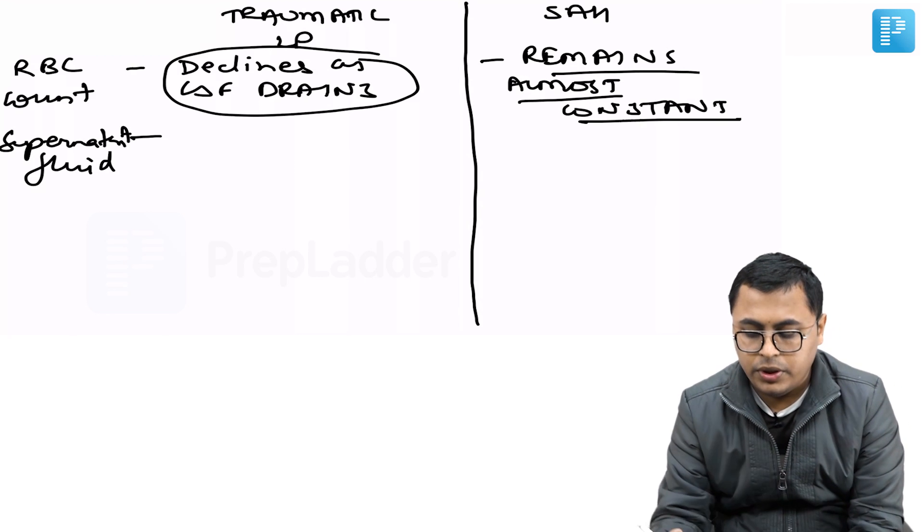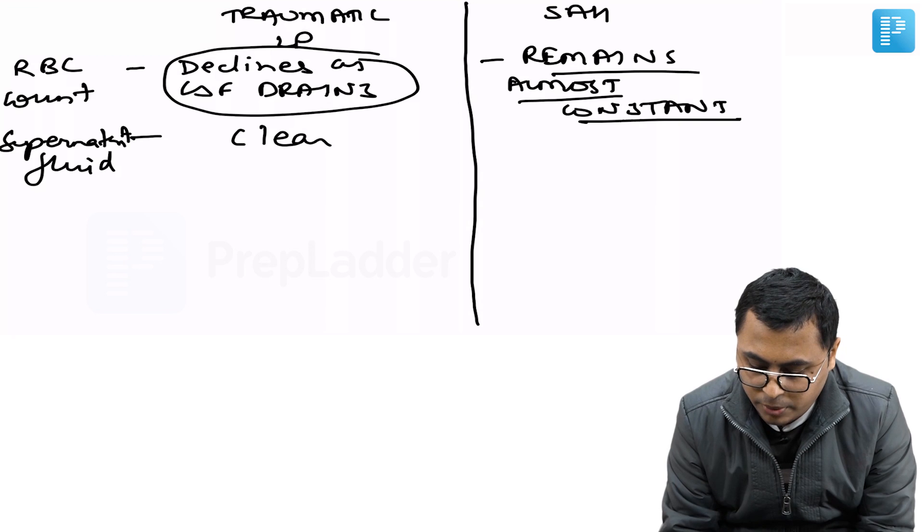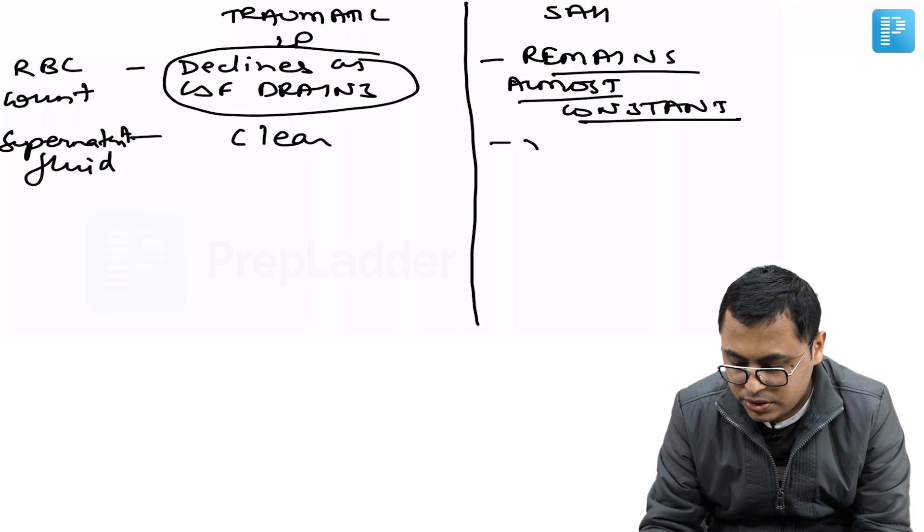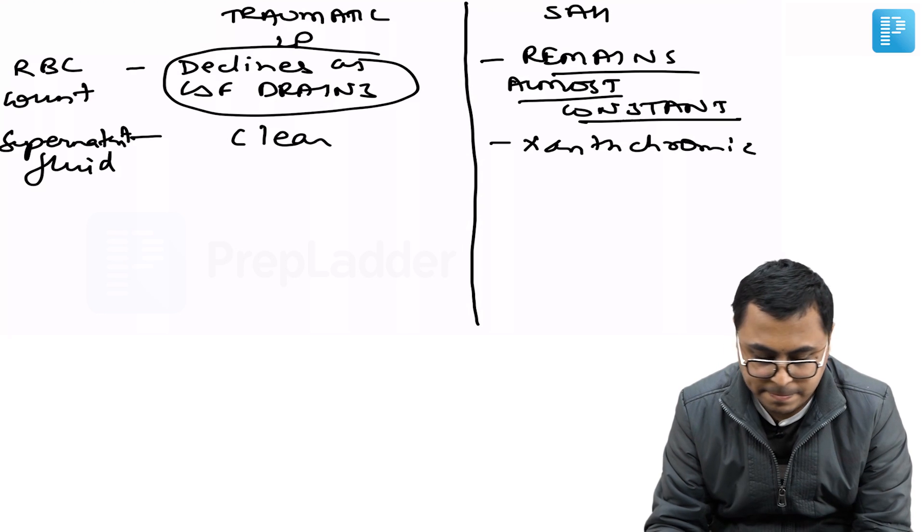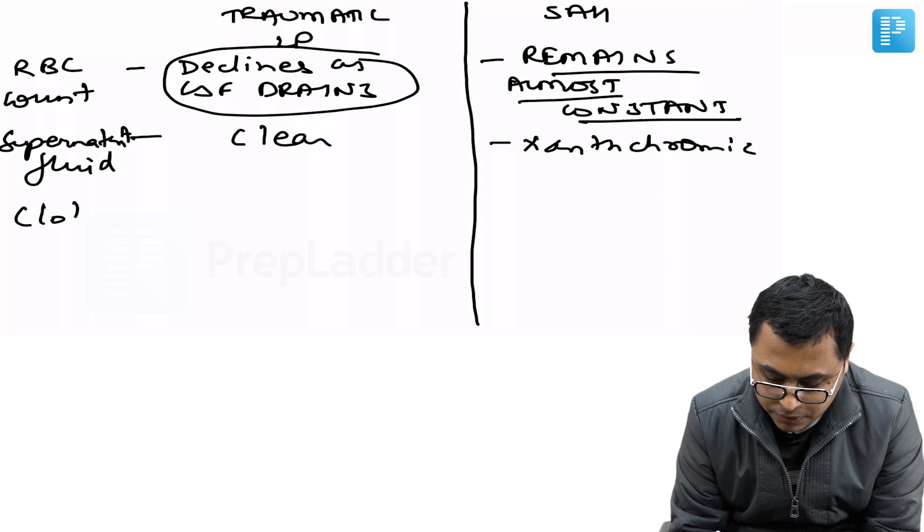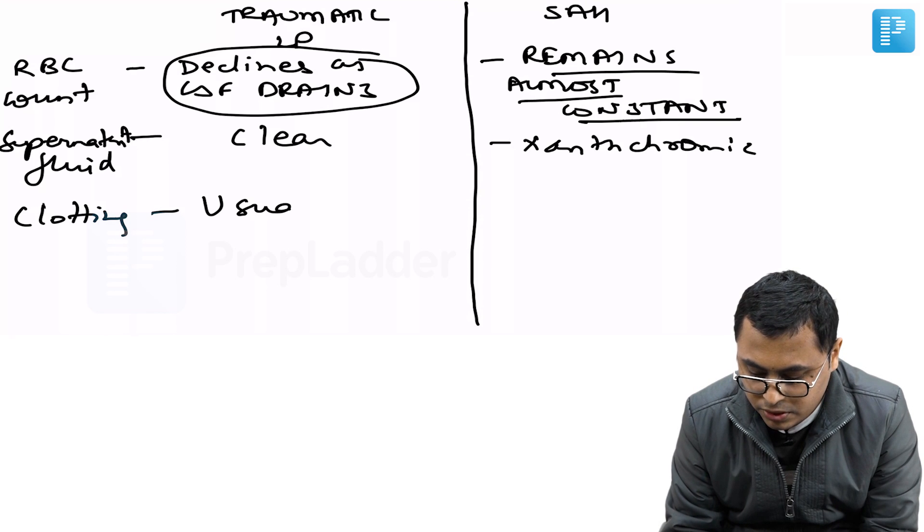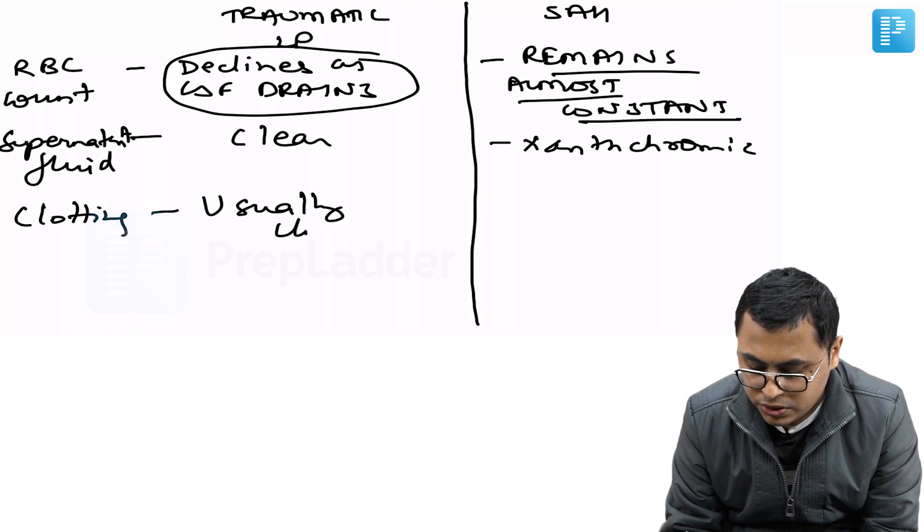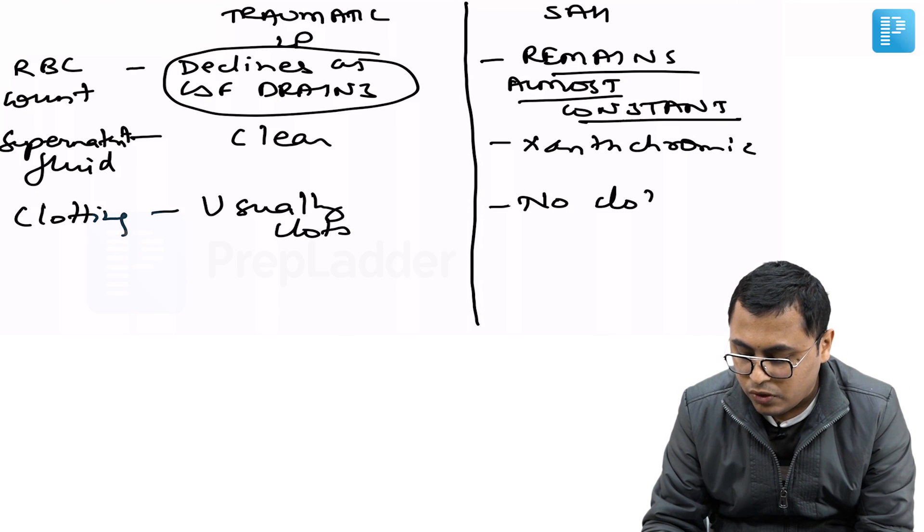Supernatant fluid is the residual fluid after the clot settles down. It is usually clear in traumatic tap, while in subarachnoid hemorrhage it is xanthochromic. The clotting: in traumatic LP the blood is fresh and usually clots, while in subarachnoid hemorrhage there is no clotting of blood.